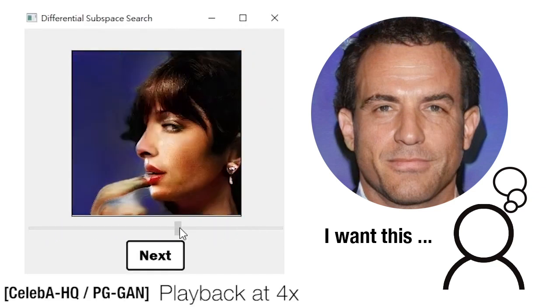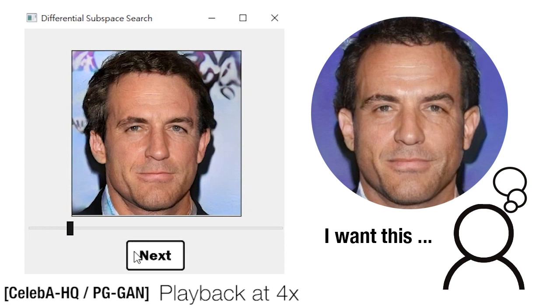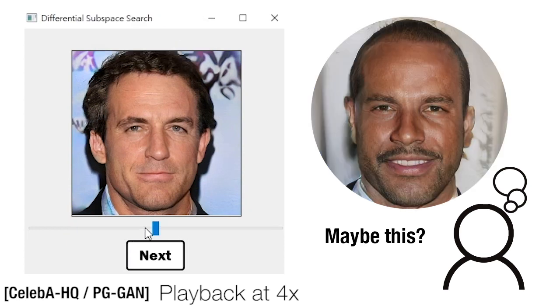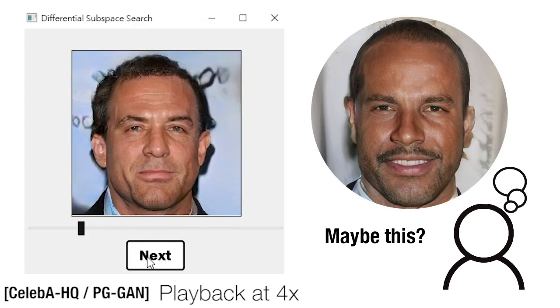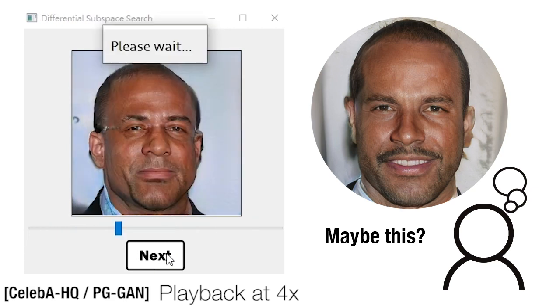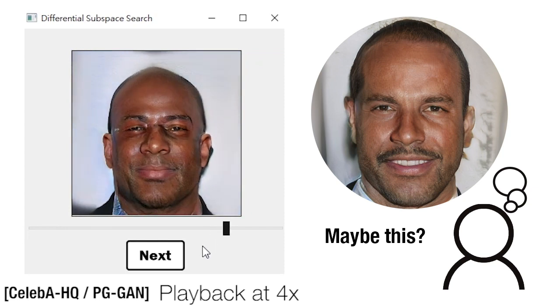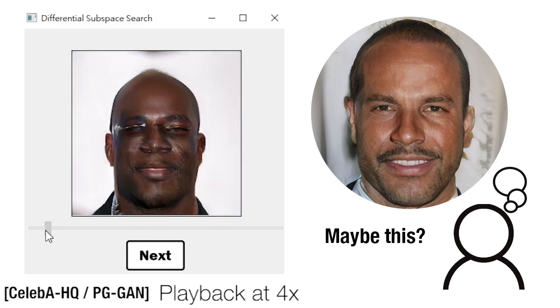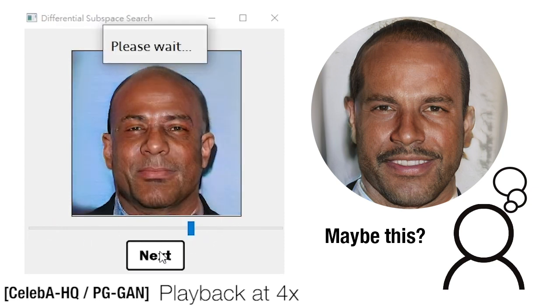Here, we exemplify our method for a generative model for images. The user iteratively explores the space through a 1D slider and may change the target over time. We view such an exploratory task as an optimization problem and provide the user effective 1D subspaces for search.